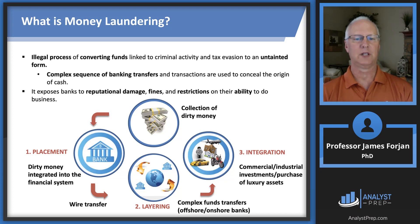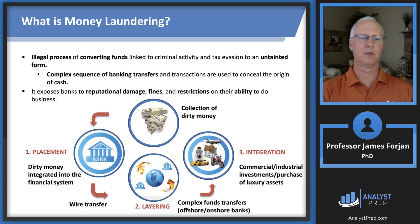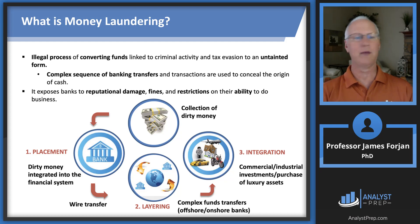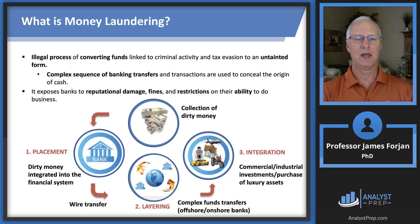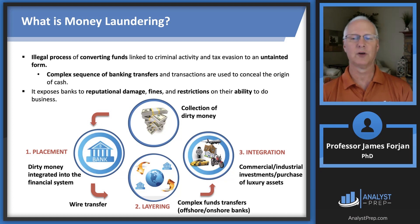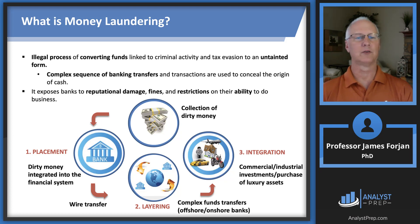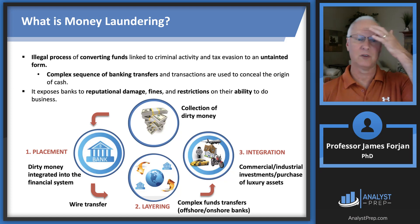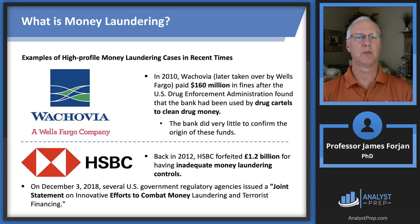Look at the chronology illustrated at the bottom. There are three steps: placement into the system, then layering — using offshore accounts and derivative securities markets, which tend to be less regulated — and then integration back into regular consumer behavior. Integration includes commercial and industrial investments and the purchase of luxury assets, like a watch or an airplane. Those luxury assets get purchased through the banking system.